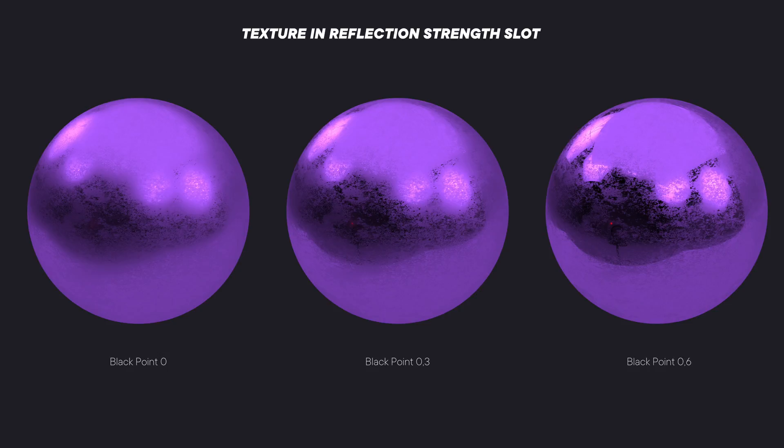Now, if we combine these options with the layer shader, where we can adjust the blending modes and the opacity of the images, we can get even more variations and subtle effects without leaving Cinema 4D at all.